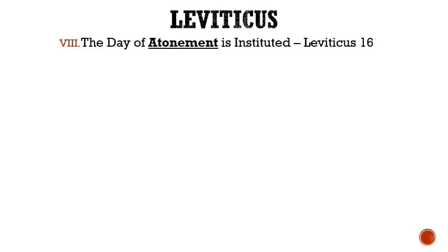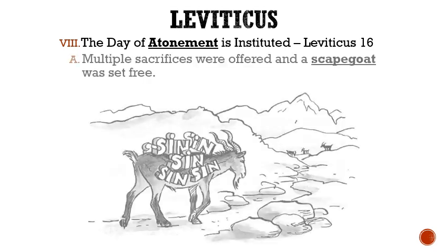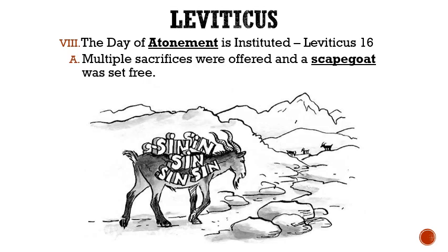Roman numeral 8: The Day of Atonement is instituted. Letter A: Multiple sacrifices were offered and a scapegoat was set free. After Aaron's two sons died, the Lord told him to bring sacrifice for the people of a young bull for a sin offering, a ram for a burnt offering, and two goats — one to be offered for a sin offering and the other to be a scapegoat to be set free. For the scapegoat, Aaron was to lay both hands upon his head, confess all the sins of the people, and then send him away by the hands of a fit man into the wilderness.